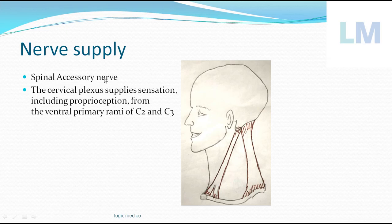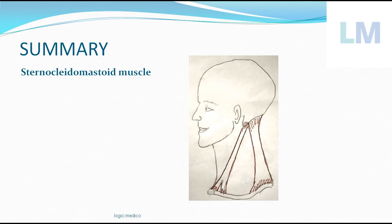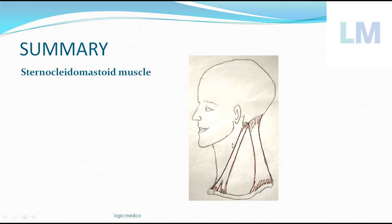In summary, the sternocleidomastoid takes origin from the anterior and superior surface of the manubrium sterni and the superior surface of the medial one-third of the clavicle. It travels upwards, laterally, and posteriorly to insert into the lateral surface of the mastoid process of the temporal bone and the lateral half of the superior nuchal line. Its nerve supply is the spinal accessory nerve — the 11th cranial nerve. Damage to this nerve results in paralysis of the muscle and the person cannot move the neck appropriately.